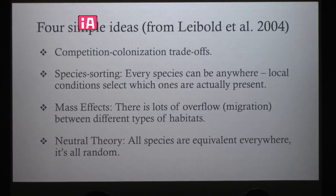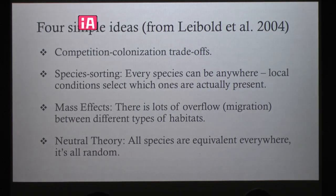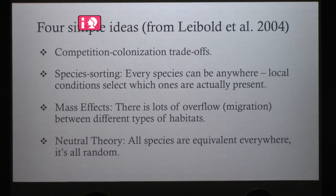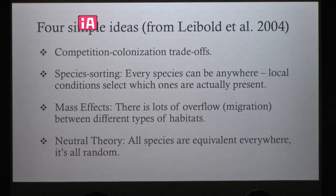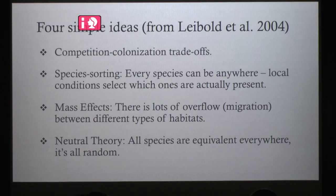The idea in Hubbell's neutral theory is that many patterns in communities could be explained without invoking any differences among species in how they interact with each other — that it could be a totally stochastic process due to demography: the birth and death of individuals and dispersal across patches.